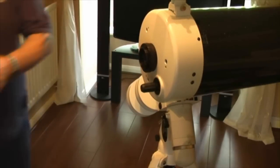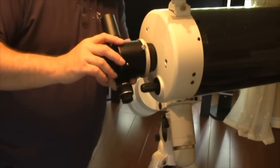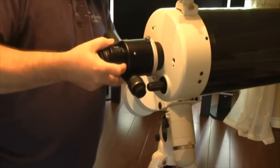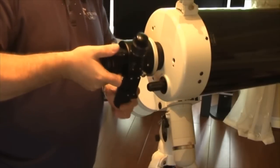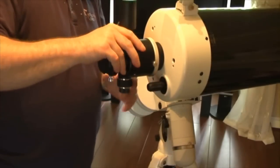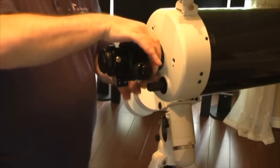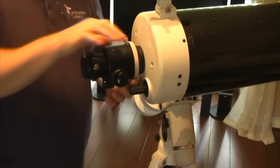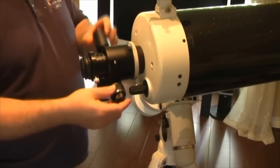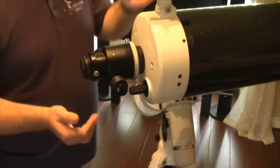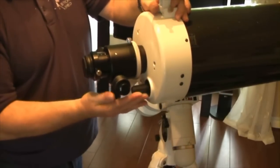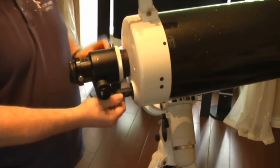Just do that up sort of hand tight. Next take the SCT focuser and offer that up to the threads on the adapter like so. Now this particular focuser you can see the silver ring there that I'm using to tighten up. There's a small knob here and this is actually a rotatable focuser so that I can position it wherever I want. Now you may find with some low profile focusers if you're not careful you will foul the focusing knob on the Mac and that's something you don't want to do. You don't want to be fouling your knob.